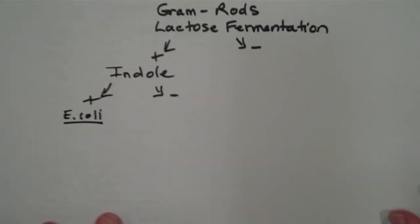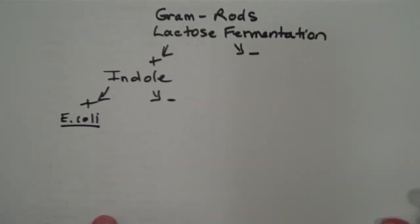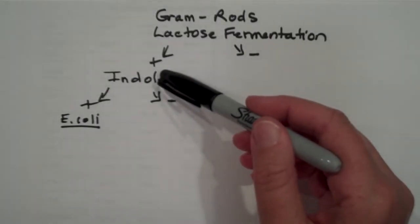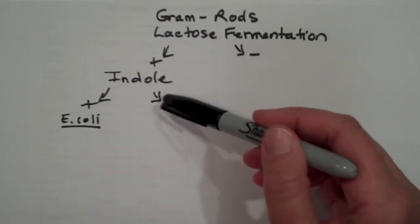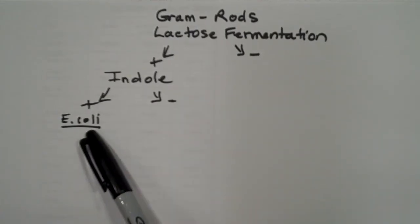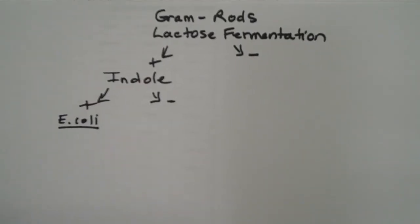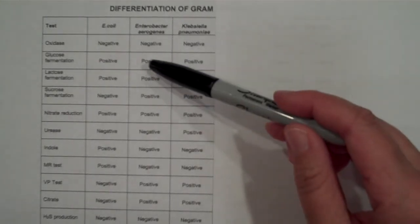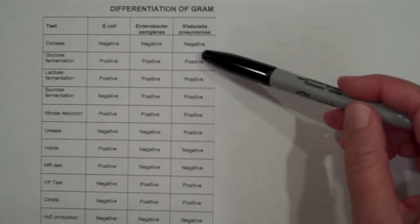So in the next step, our dichotomous key would now have indol with positive and negative branches. Of the three bacteria, the only one that tested positive was E. coli.